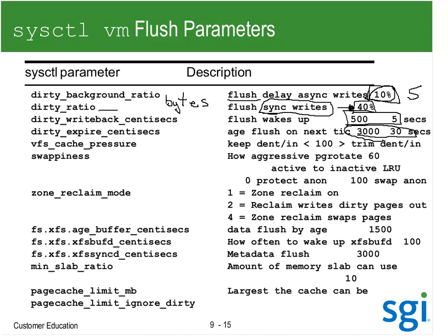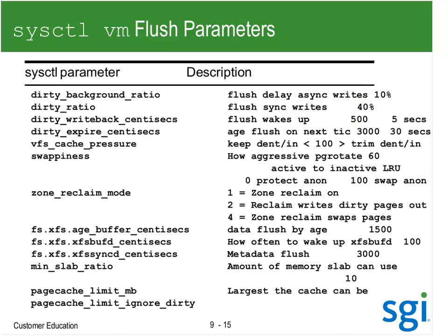I don't want the flush daemon to be waking up too quickly - I'd rather have it worry about it by dropping both thresholds down. I would typically set dirty background ratio to 5 and dirty ratio to 10. On a machine as big as yours, I might be using by bytes to get it even smaller. The next one: dirty expire centiseconds, set to 30,000 by default, which says if the data is older than 30 seconds, flush it. Then we've got VFS cache pressure - I wouldn't worry about this right now, leave it alone. This is the difference between the slab and the cache, and I see no reason on your system to adjust it.